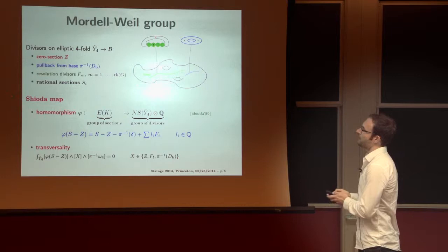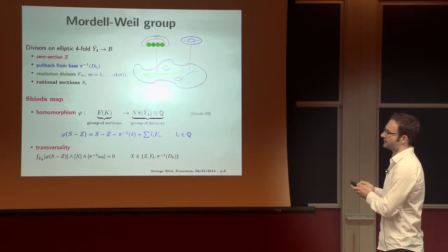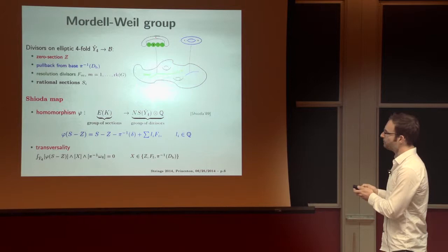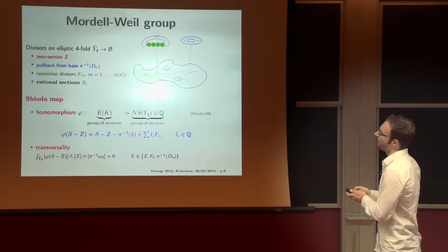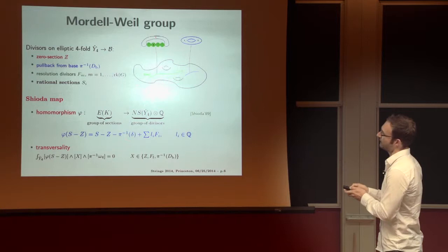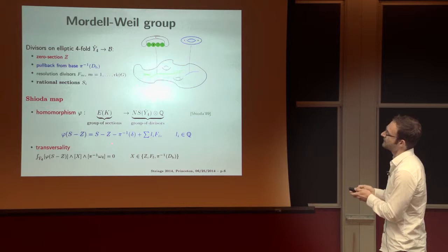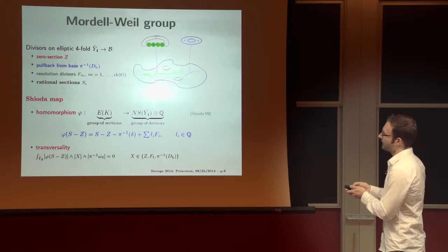And the key role in this business is played by the Shioda map. Namely, the Shioda map is a homomorphism from the group of sections to the group of divisors, these guys. It's a homomorphism which, in particular, therefore respects the group law and which maps a rational section, the difference of a rational section with the zero section, to such an expression of, to such a linear combination of divisors, s minus z minus pullback of something from the base, plus some rational linear combination of resolution divisors. This would be important. And the crucial point is that it's a homomorphism and that it obeys transversality. So this linear combination is then orthogonal to the zero section, the resolution divisors in these terms.